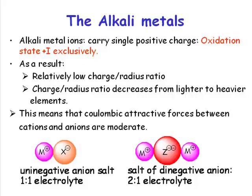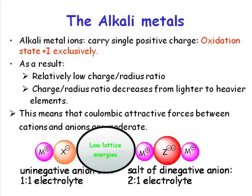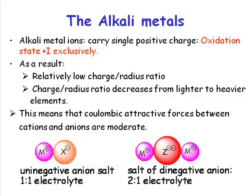So we have relatively weak Coulombic interactions between cations and anions, and this means that you're going to have relatively low lattice energies. Relatively low lattice energies will translate into relatively low melting points for the ionic solids. So a lithium salt is going to have typically a lower melting point than a magnesium salt, for example, simply because the ionic interactions are going to be weaker because the charge is lower.